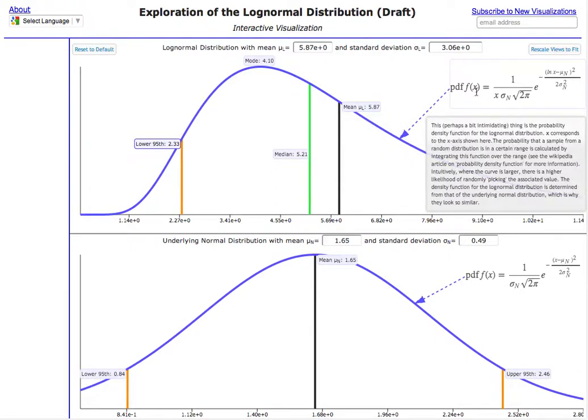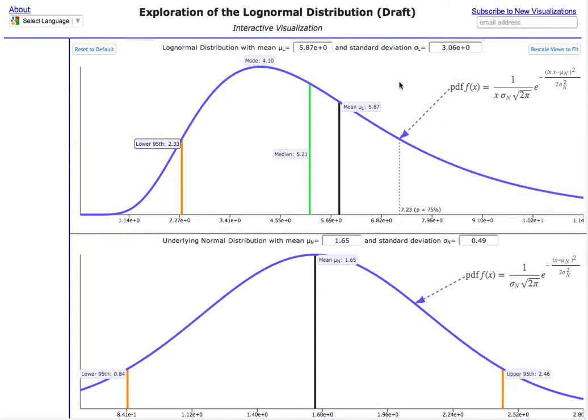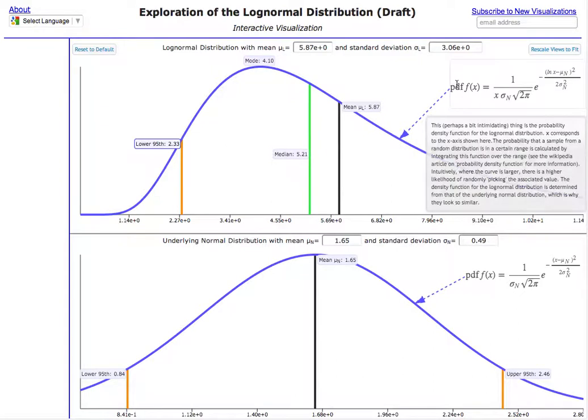You notice that formula there. I think it looks pretty nice in the sense of the typesetting. I'm using something called MathJax for that, which is basically using LaTeX, the TeX mathematics typesetting language. This is all CSS and HTML that it generates, maybe some SVG too, which I think looks really nice. It makes some Ajax calls when it renders, so it takes a second for the equation to pop up.